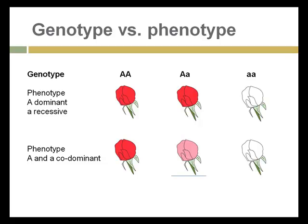The phenotype is red or white. However, in a situation where large A and small a are co-dominant, the phenotype — the characteristic that we see — can be red, pink, or white, depending on the genotype. So the genotype is the actual combination of genes, for instance large A and small a, and the phenotype is the actual appearance of the plant that comes out of the genotype.